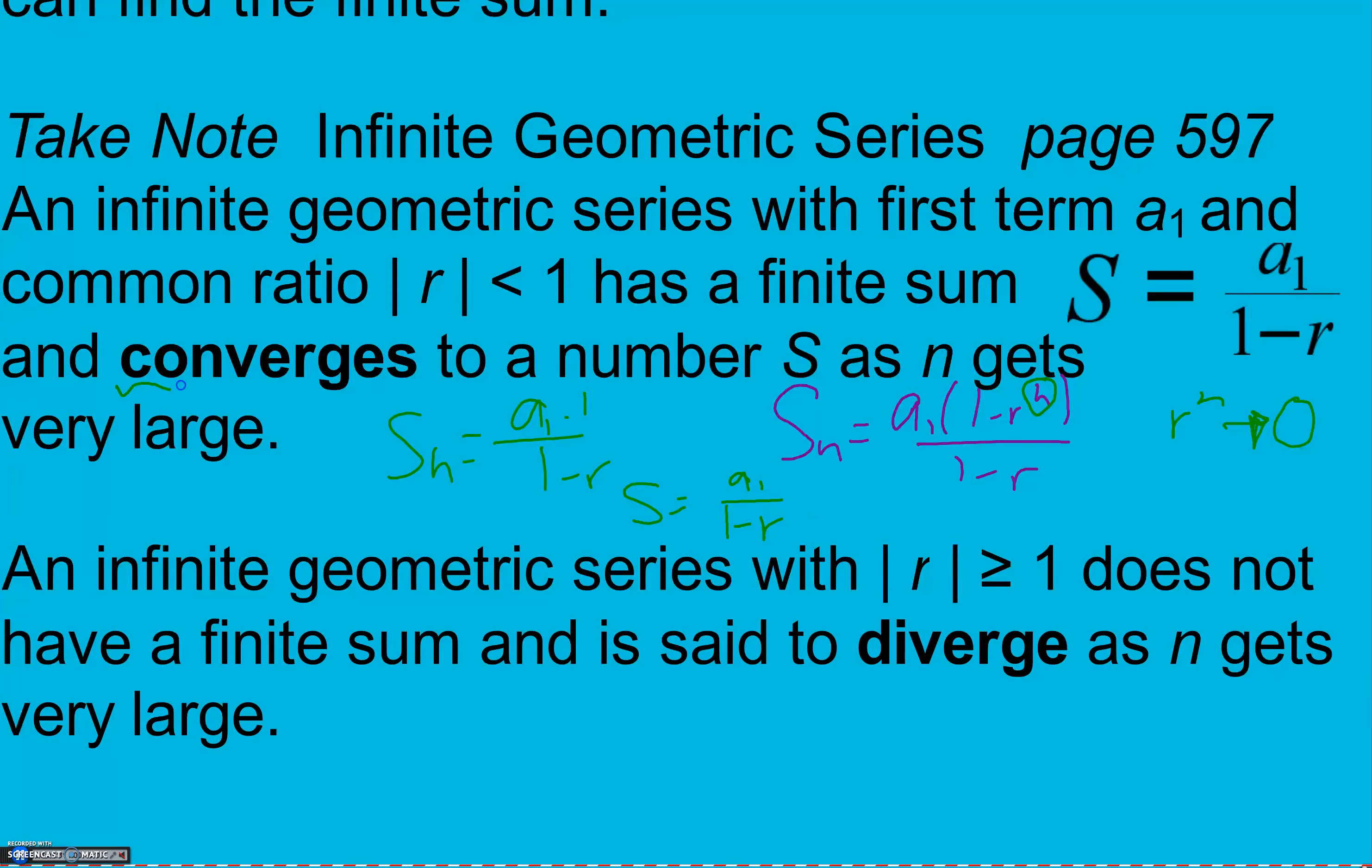We call this convergence. So we say that it converges to a number S as n gets very large. An infinite geometric series with the absolute value r greater than or equal to 1 does not have a finite sum and is said to diverge as n gets very large.